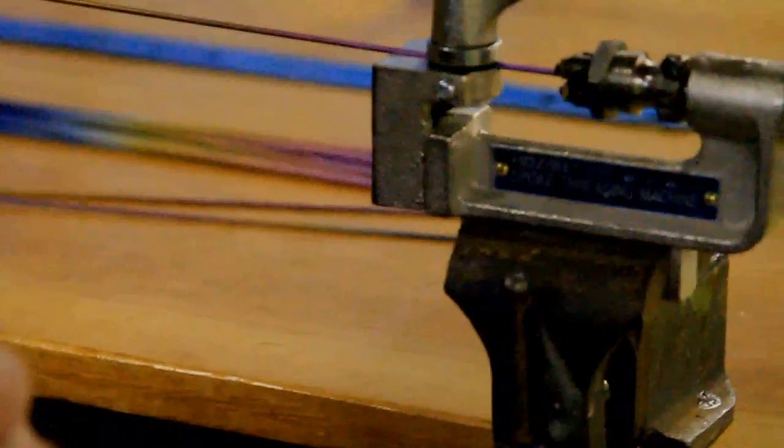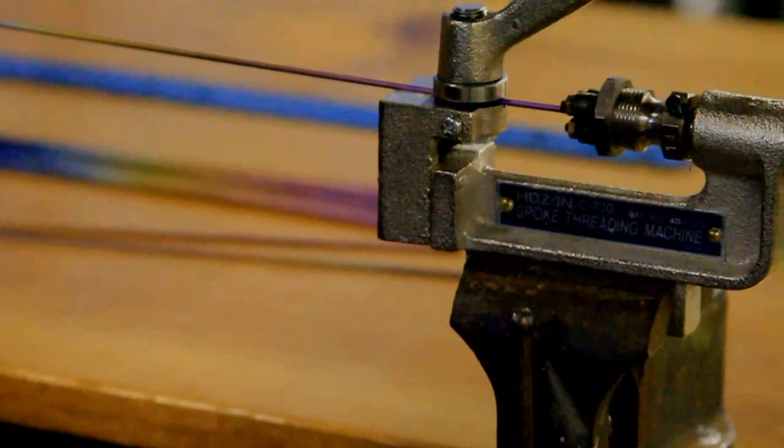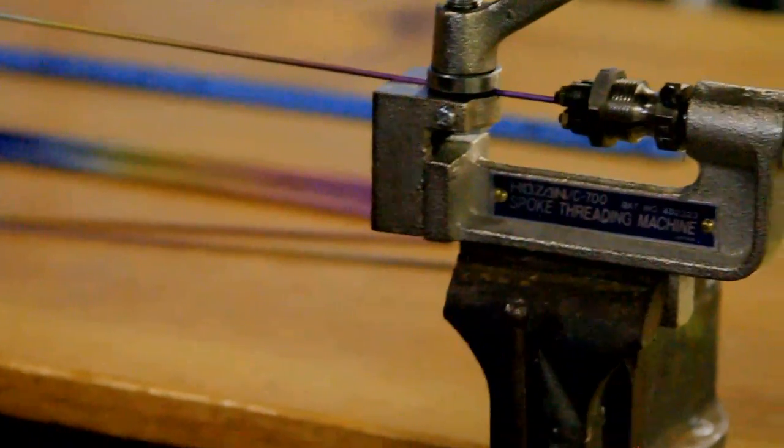And it has a tap on the machine, and it actually, it's not a tap, it rolls. So rather than removing material, it crushes it and forces it, like cold forging, it forces the threads into the material. So we don't want to actually remove material.